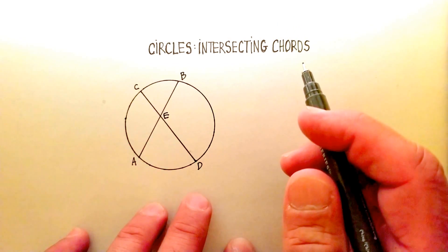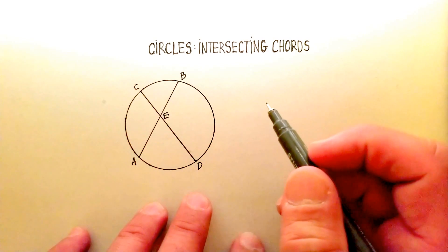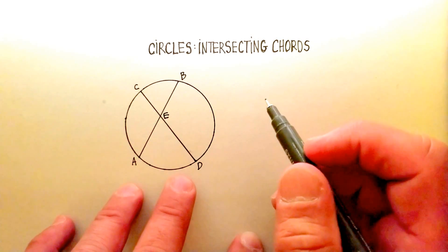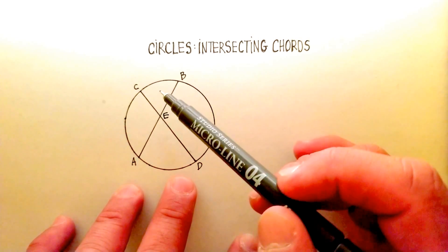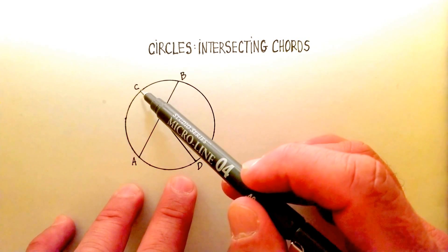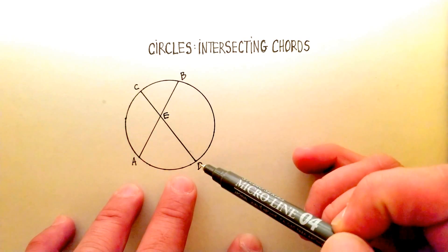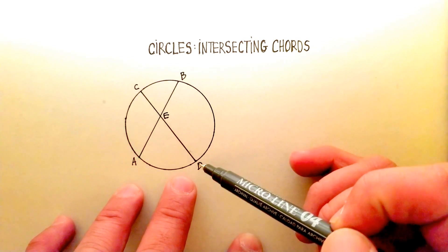Now, before I talk about that, let's just talk about what a chord is. Remember, a chord is a line whose two endpoints lie on the circumference of a circle.